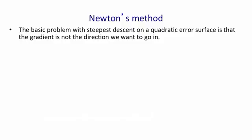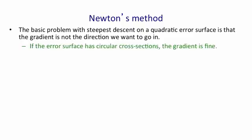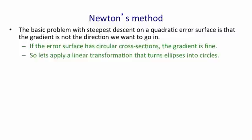So let's start with Newton's method. Newton's method addresses the basic problem with steepest descent, which is that the gradient isn't the direction you really want to go in. If the error surface has circular cross-sections, and it's quadratic, the gradient is a good direction to go in. It'll point straight at the minimum. So the idea of Newton's method is to apply a linear transformation that turns ellipses into circles. If we apply that transformation to the gradient vector, it will be as if we were going downhill in a circular error surface.